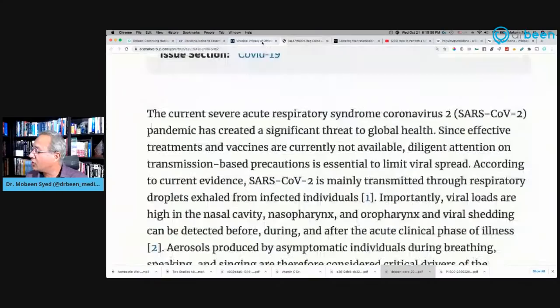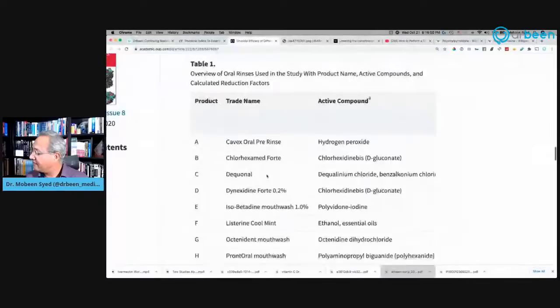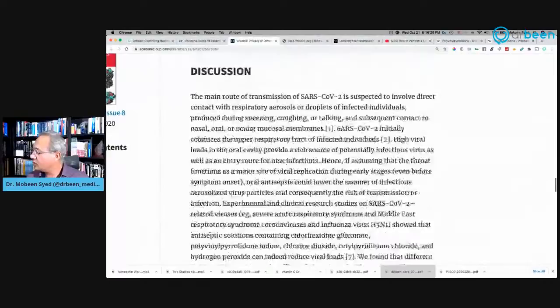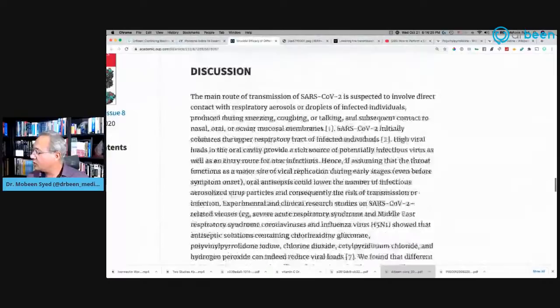Now, what are these products? So if I go to their site or their study, they have actually listed out these products here. So Cavex oral pre-rinse, chlorhexamate, and so on. So C is Dequinol, E is Isobarodyne, and F is Listerine. All these three performed significantly to reduce the virus numbers in the simulated oral and nasal cavity. Then what they did was they have also discussed what are the active ingredients in them. So for example, Cavex oral pre-rinse, hydrogen peroxide, and so on. You can actually read them. Once again, Isobarodyne is polyvidone iodine. So iodine keeps winning here. That is a common thing in this here situation.